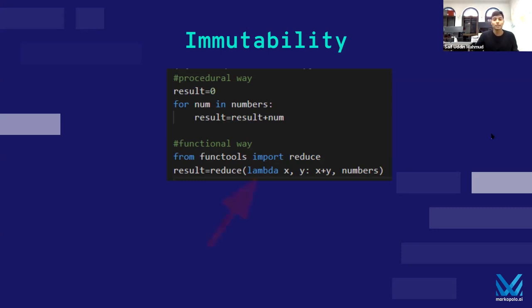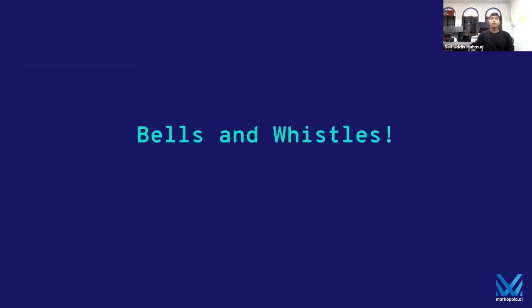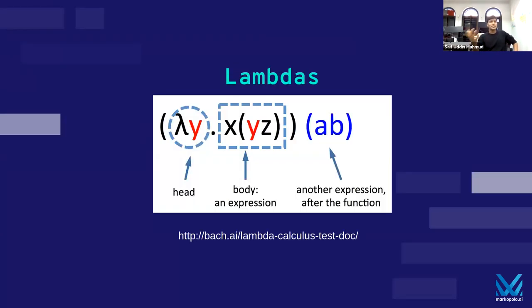Another thing is the use of a lambda function. We've all heard 'lambdas everywhere,' but essentially you can think of it as an anonymous function that takes in two parameters and gives you back one pure result. Functional programming comes with a few bells and whistles. The first one is lambdas — you can see here is a lambda calculus expression. I don't know lambda calculus myself, but this is the origin of lambda functions.